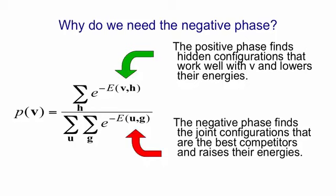The second phase in the learning, the negative phase, is doing the same thing but for the partition function, that is, the normalizing term on the bottom line. It's finding global configurations, combinations of visible and hidden states, that give low energy and therefore are large contributors to the partition function. And having found those global configurations, it tries to raise their energy so that they contribute less. So the first term is making the top line big, and the second term is making the bottom line small.